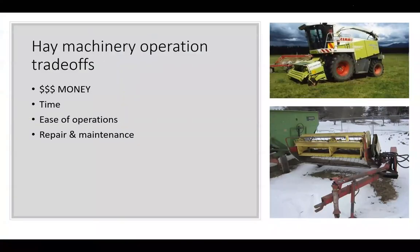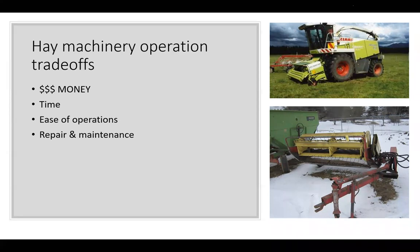When it comes to hay machinery operations, we have two main trade-offs on the farm: money or time. We need at least one or both to achieve our goals. From an ease-of-operation standpoint, newer equipment is probably better — you have better display screens and more electronic software. But from a repair and maintenance standpoint, an older machine like the New Holland 467 might be easier to find parts for, and the parts you do get will be cheaper and easier to work on.